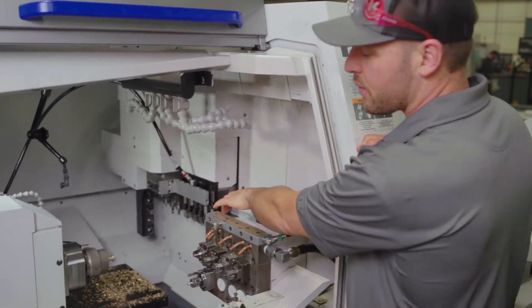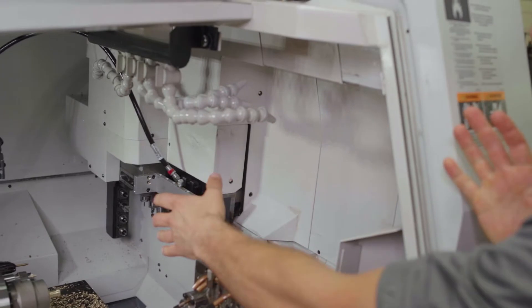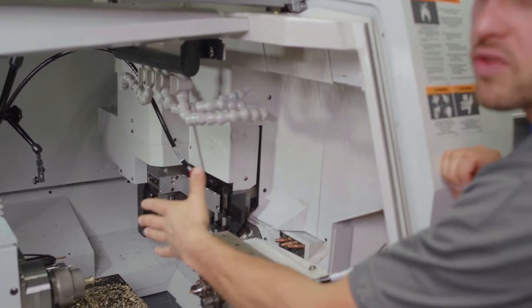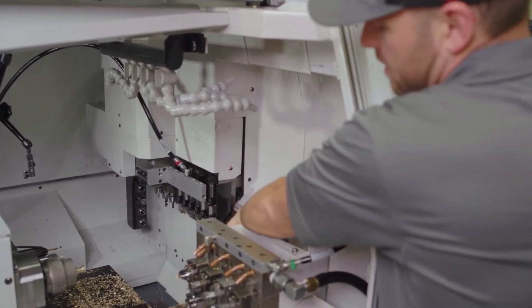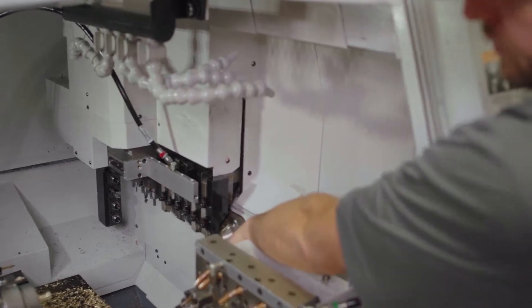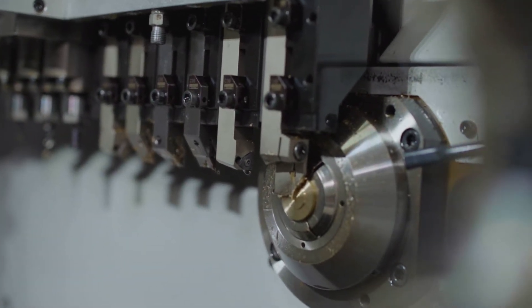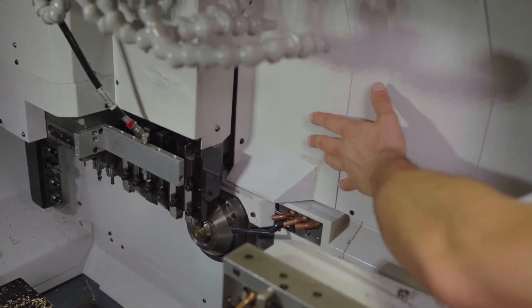So if we look inside here, a conventional lathe sticks the raw material out, hanging onto it with a chuck or a spindle of some sort, and the cutting tools come across the raw material. In the Swiss lathe we have what we call a guide bushing that supports the raw material, and behind that guide bushing is the main spindle that will hold and control the raw material.